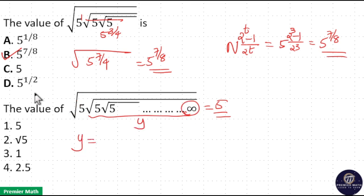Which means I can write this y as root of 5y. If you square, y^2 = 5y. Then y cancels, y = 5.